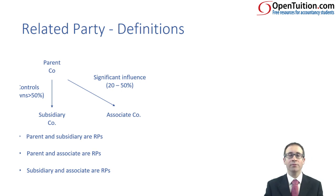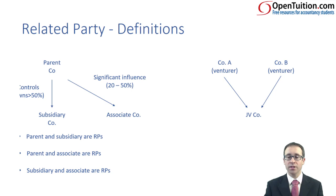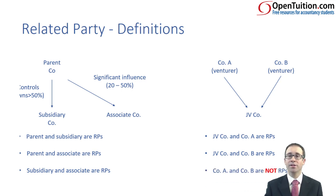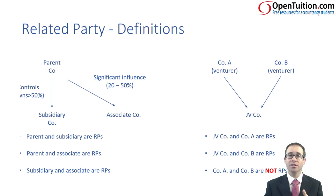A joint venture company has venturers — company A and company B — and both have joint control over the joint venture company. So the joint venture company and company A are related parties, and the joint venture company and company B are related parties, because there is control, albeit joint control. However, be very careful: company A and company B are not related parties. Company A does not control company B and company B does not control company A — the only control they have is jointly over the joint venture company. So only transactions between company A and the joint venture, or company B and the joint venture, would need to be disclosed.